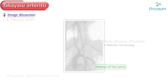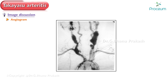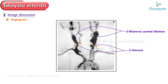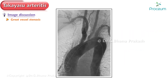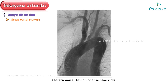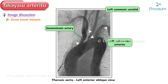The fifth image shows an angiogram of a child with Takayasu Arteritis demonstrating massive bilateral carotid dilation, stenosis, and post-stenotic dilation. The last image shows great vessel stenosis on angiography of the thoracic aorta, specifically the left anterior oblique view, of a patient with Takayasu Arteritis. Stenoses, indicated by white arrows, are seen in the innominate, left common carotid, and left subclavian arteries. An injection catheter is seen in the dilated ascending aorta, shown by the green overlay.